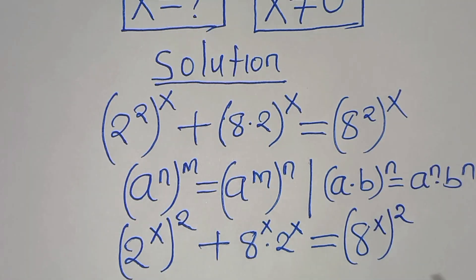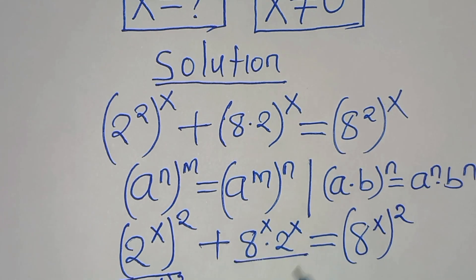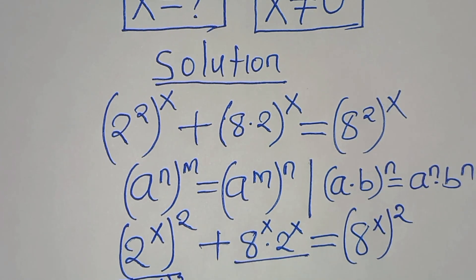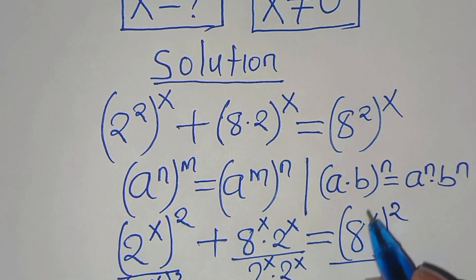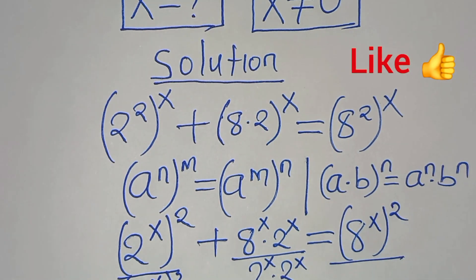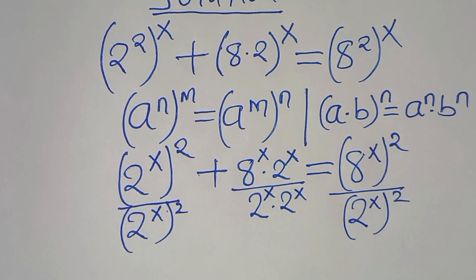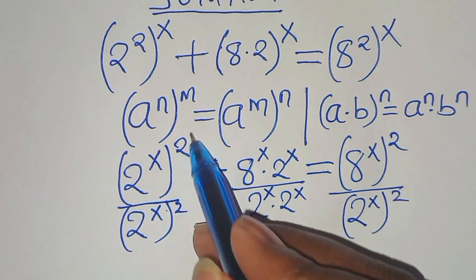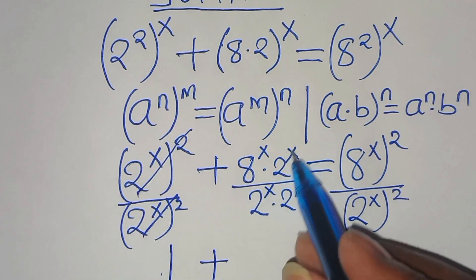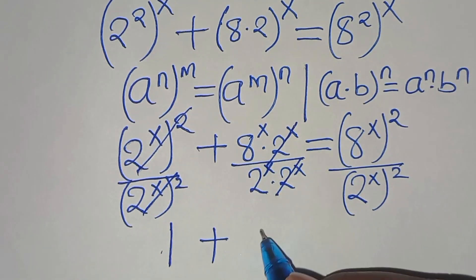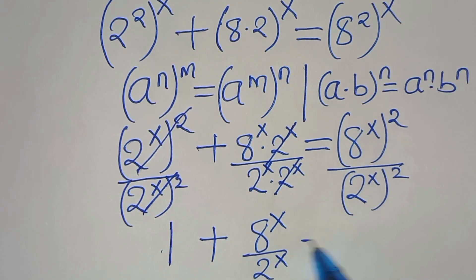The next step is to divide through by 2 to the power of x squared. We divide all terms by 2 to the power of x squared, which is the same as 2 to the power of x times 2 to the power of x. We also divide 8 to the power of x squared by 2 to the power of x squared.